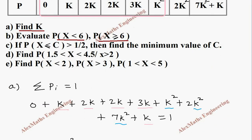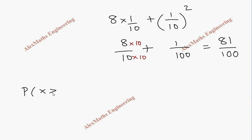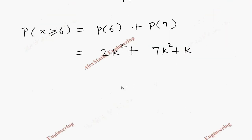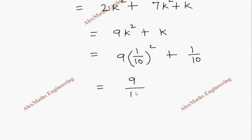For the second part, P(X ≥ 6) means 6 and more than 6, so we add P(6) plus P(7). From the table, P(6) is 2k² and P(7) is 7k² plus k. Totally we get 9k² plus k, which is 9 × (1/10)² plus 1/10 = 9/100 plus 1/10. Multiplying to get a common denominator gives 9 plus 10, so the result is 19/100.